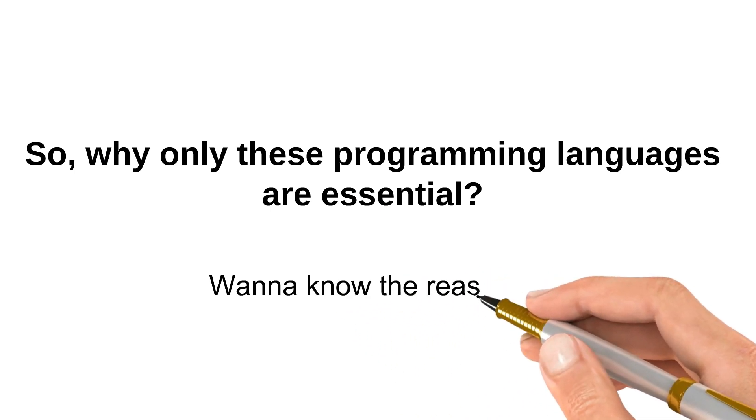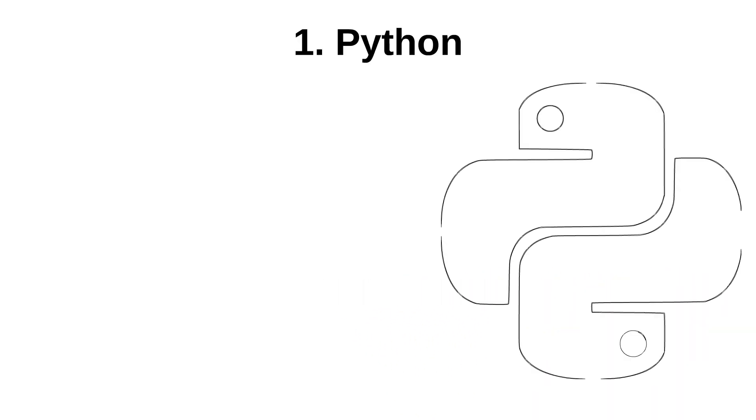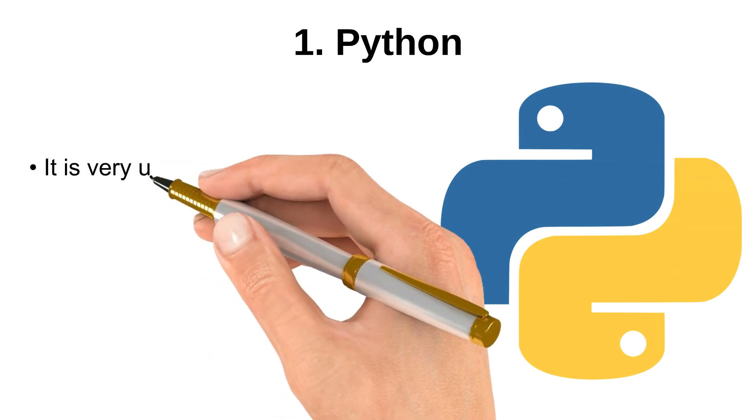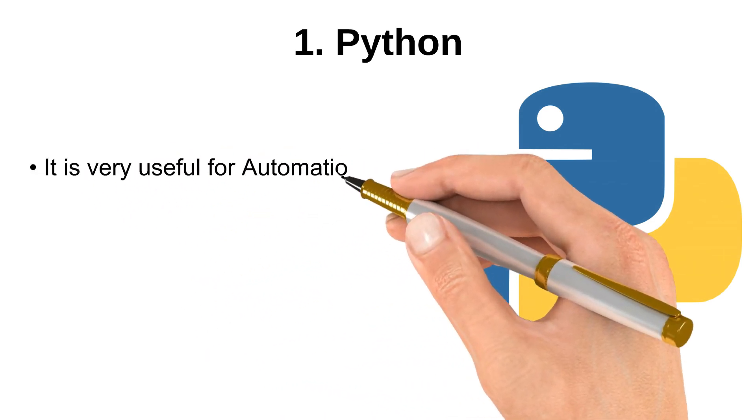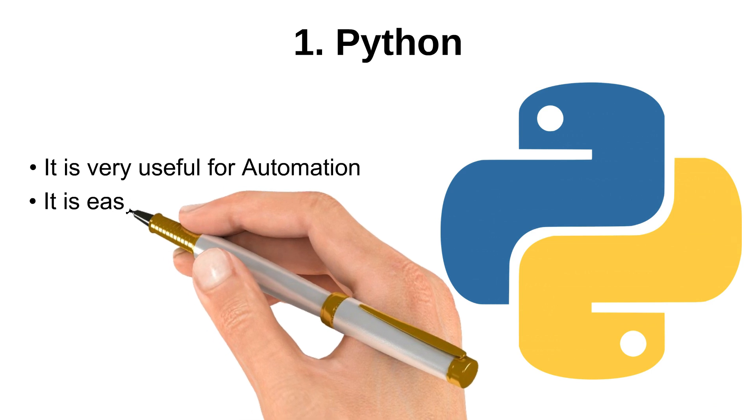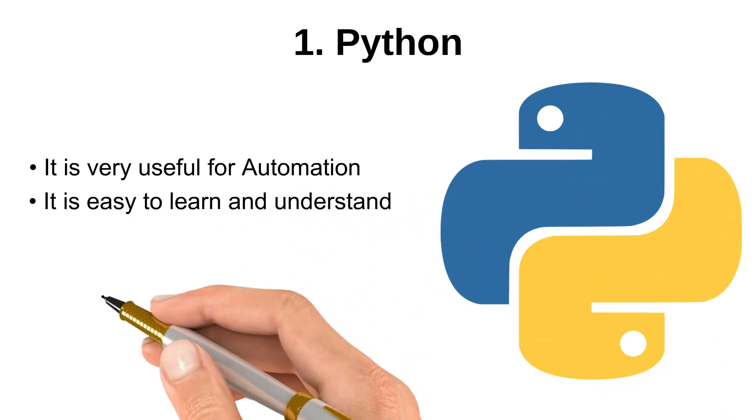For the first language, Python - it is very useful for automation. If you want to gather some information, then Python is the right language for you. It is very easy to learn and understand.